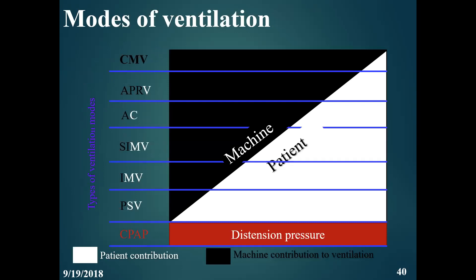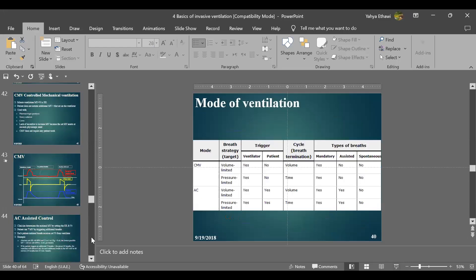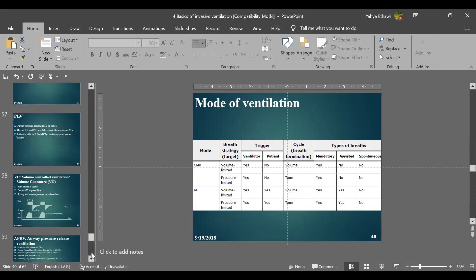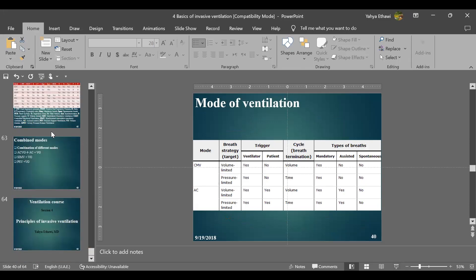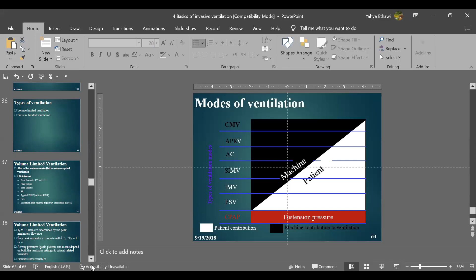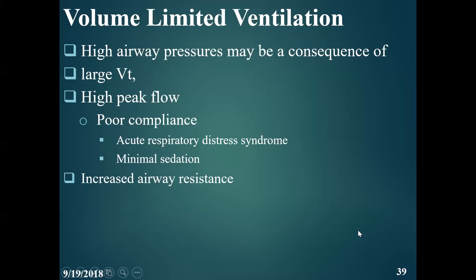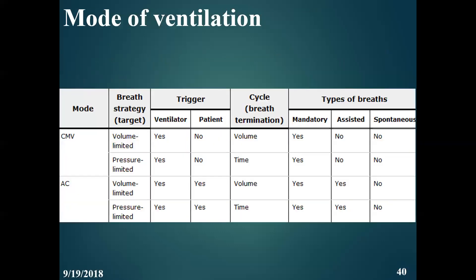The combination of conditional variables, phase variables, and type of breath gives us the mode. There are many modes of ventilation. First there is conventional mandatory ventilation — conventional means the rate is 60 and below, while high frequency means the rate is more than 60. We also have another mode called assisted control, and some people call it SIPPV.